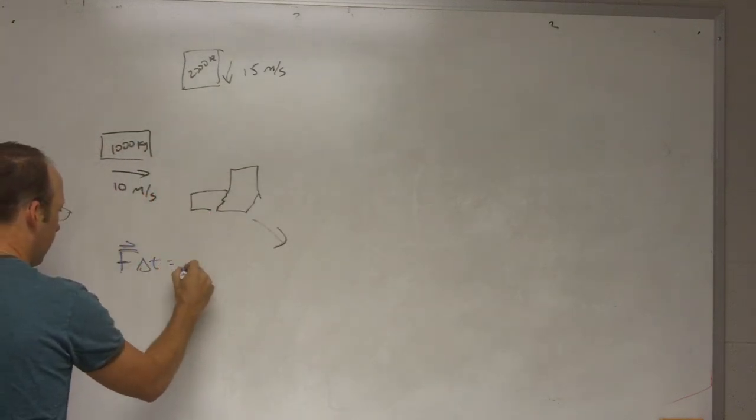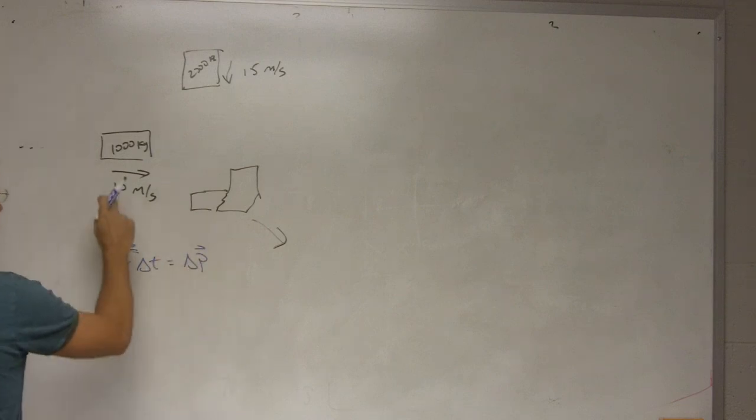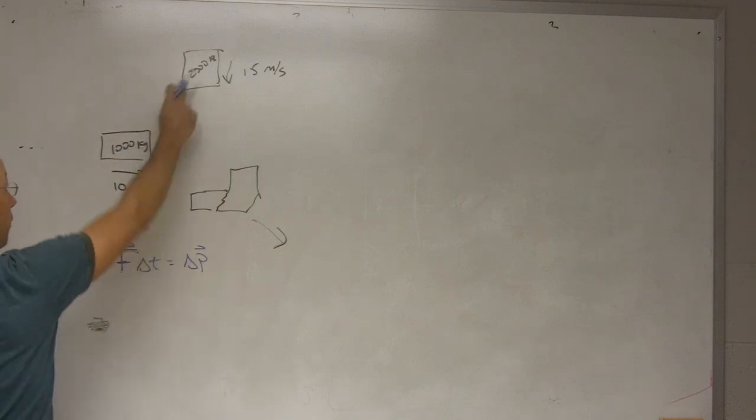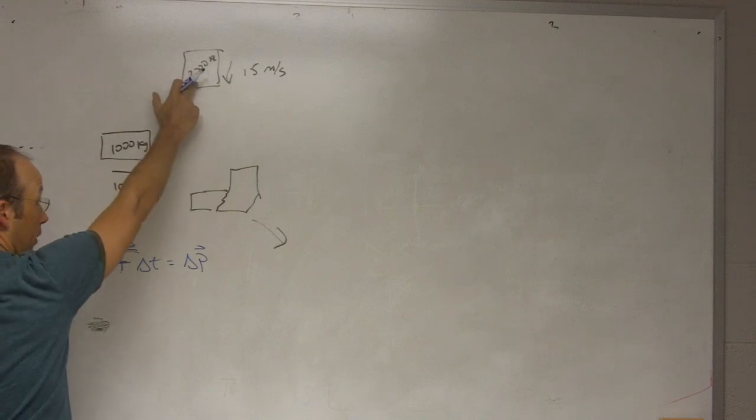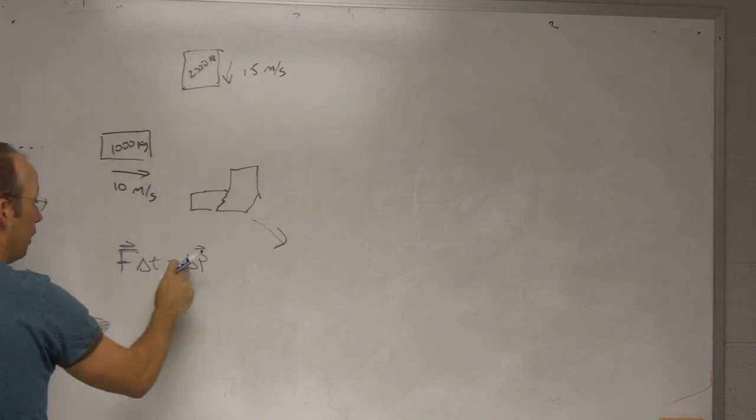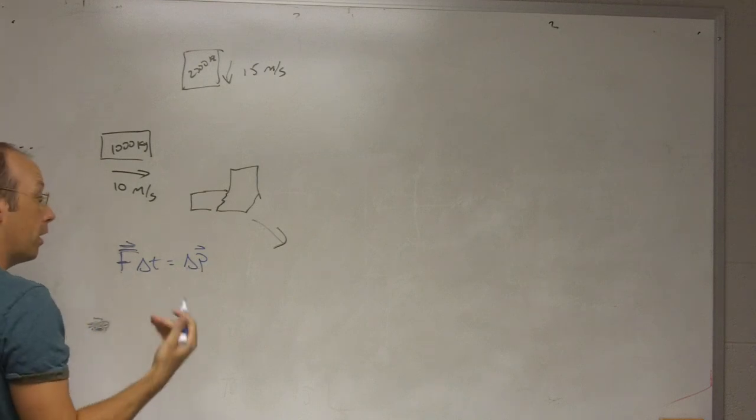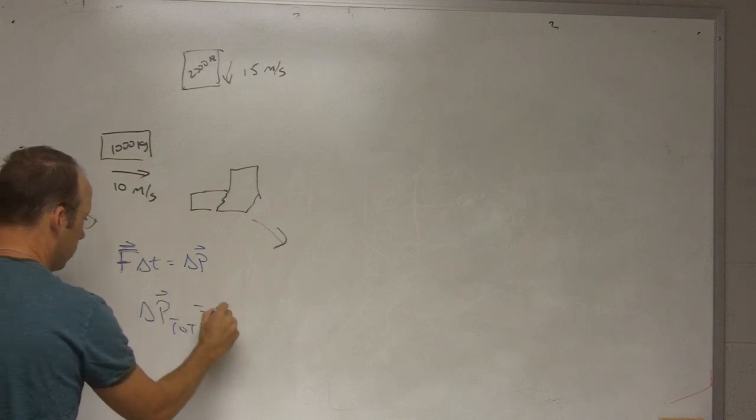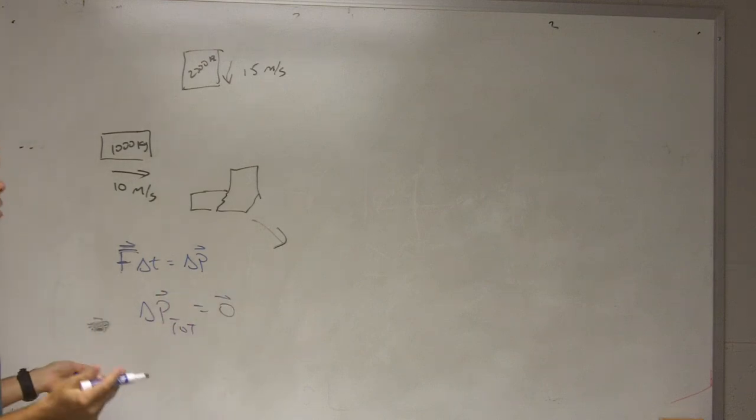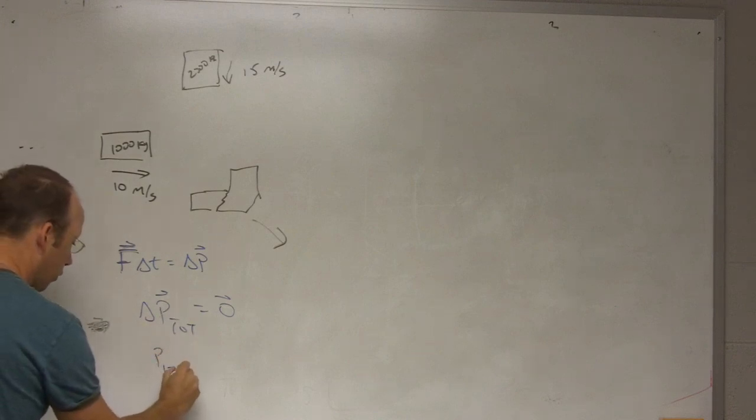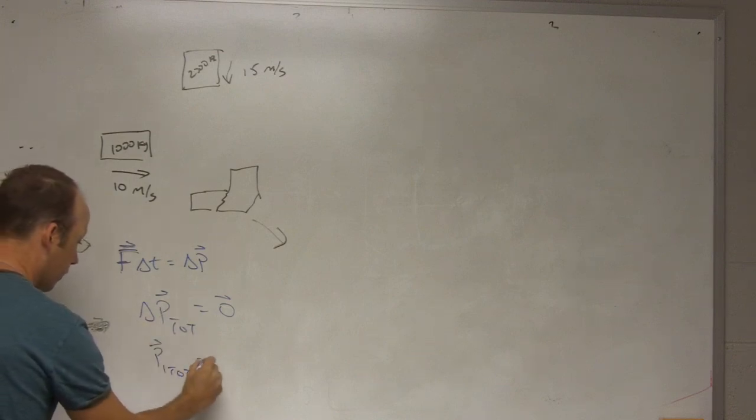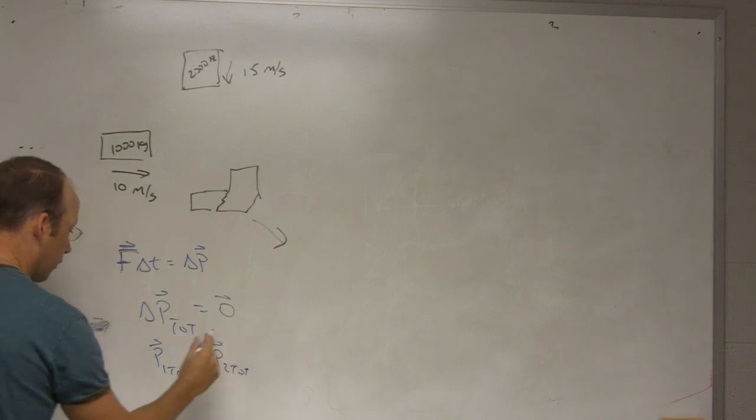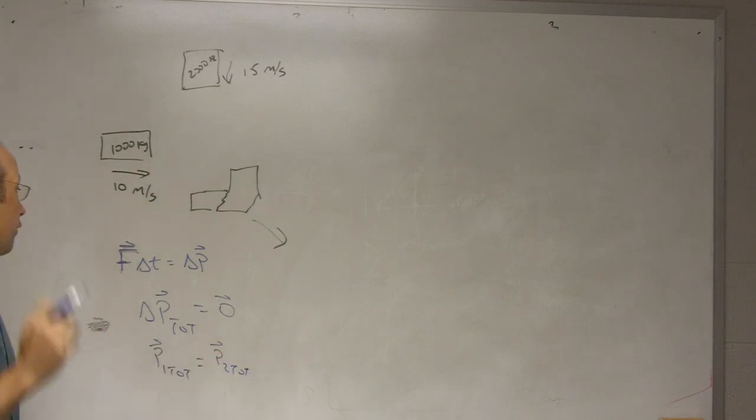F delta T equals change in momentum. So if the force on this one, for the same time, is actually opposite force, opposite direction of the force on this one, on that one, then they have opposite changes in momentum. We can also write that as, delta P total equals zero. Or we could write that as P one total equals P two total. So the initial momentum equals the final momentum, and that's your conservation momentum. And I derived this in my book, so you can look at it there. I don't want to spend too much time on that. I don't want to actually use it.